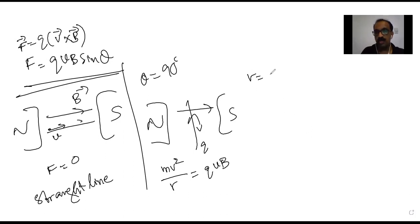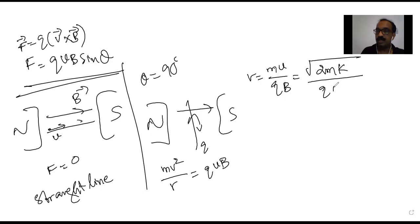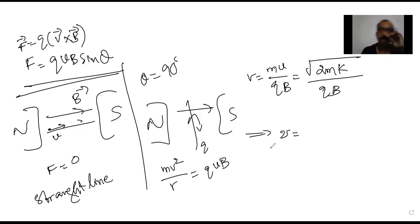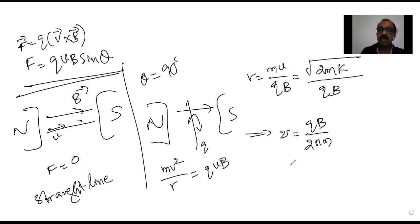Based on this, the radius of the circular path is r = mv / qB, which can also be written as √(2m × KE) / qB, since momentum and kinetic energy are related. The frequency of revolution of a charge particle in a perpendicular magnetic field is f = qB / 2πm, and the time period is T = 2πm / qB.